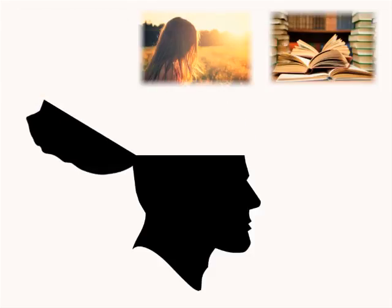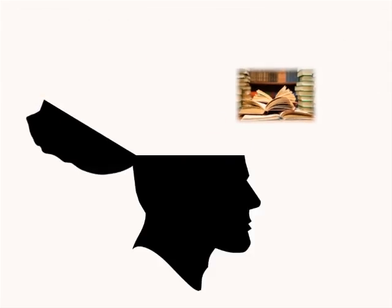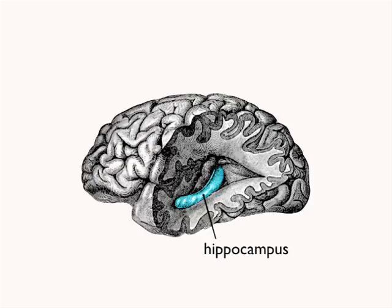Memories are representations of past experiences, and the encoding of these memories depends on a structure in the brain called the hippocampus. Before we talk about the hippocampus, let's first talk about neuronal communication.